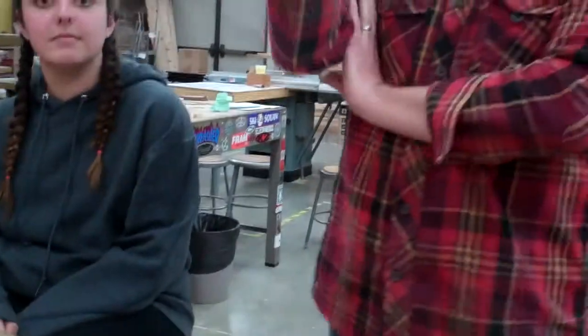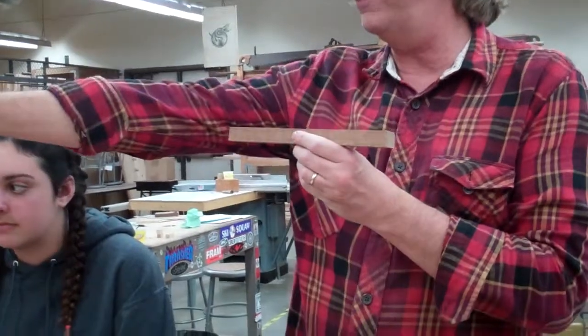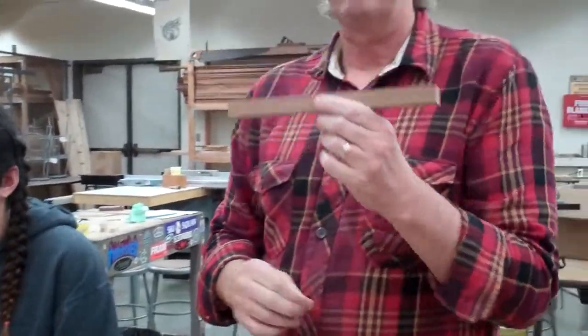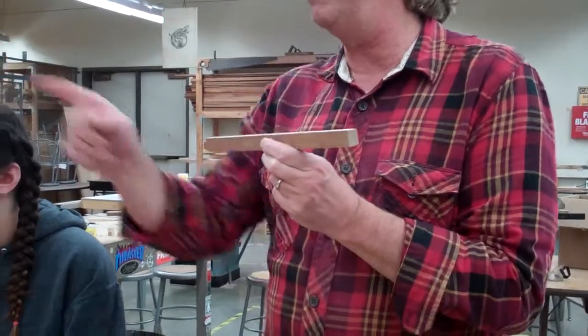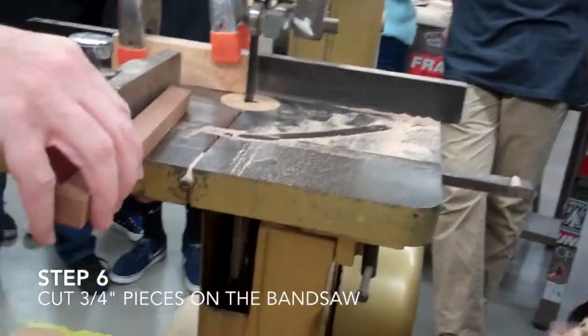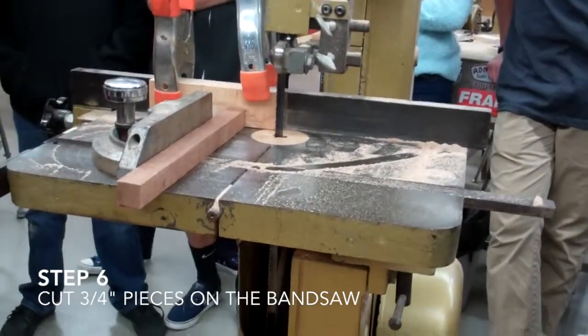Before I give it to you, I'm going to ask you how many you're going to cut so you can remember. And if your answer is four, you will not get this piece. Your answer should be five. How this works is you want to have this up against the fence and you're going to push it through.